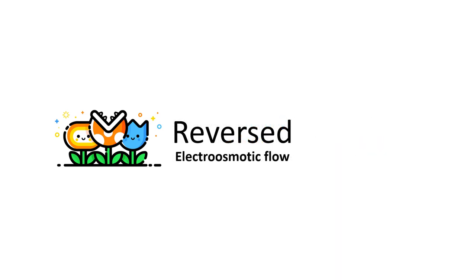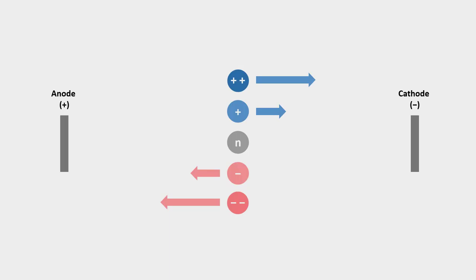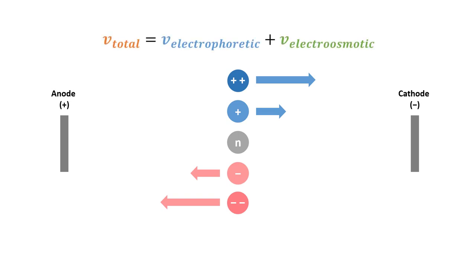In this video, we're going to learn about the reverse electro-osmotic flow by looking at how to reverse the flow based on what we have learned so far. Previously, we have learned that the migration rate of a solute is equal to the sum of the electrophoretic velocity and the electro-osmotic velocity.